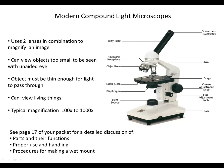Now let's cover the parts of the microscope. The ocular lens, or eyepiece, is what we look through — most ocular lenses have a magnification of 10x. The arm supports the upper part of the microscope and is used to carry it. The stage supports the slide, and stage clips keep the slide in place. The coarse adjustment knob — the big wheel — is used to rapidly move the stage up and down, quickly bringing your object into the focal plane.